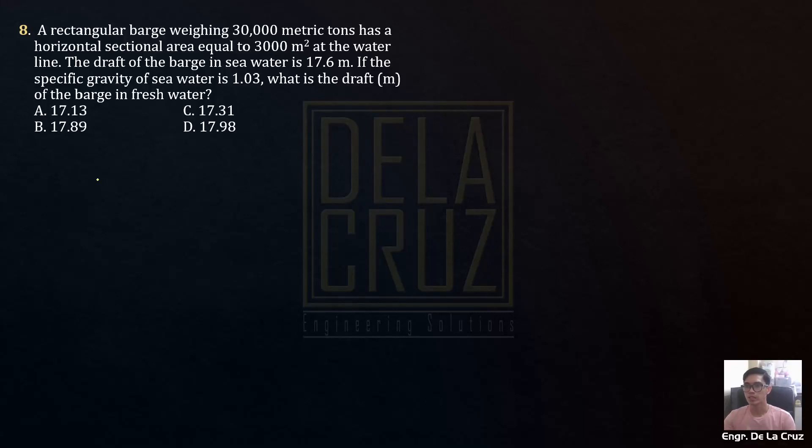Okay, so let's have number 8. A rectangular barge weighing 30,000 metric tons has a horizontal cross-sectional area equal to 3,000 square meters at the waterline. The draft of the barge in seawater is 17.6 meters. The specific gravity of the seawater is 1.03. What is the draft in meters of the barge in fresh water?